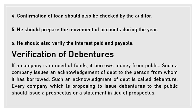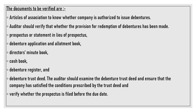Verification of debentures: if a company is in need of funds, it borrows money from the public. The company issues an acknowledgement of debt to the person from whom it has borrowed; such an acknowledgement of debt is called a debenture. Every company proposing to issue debentures to the public should issue a prospectus or statement in lieu of prospectus.